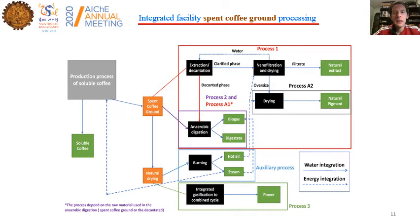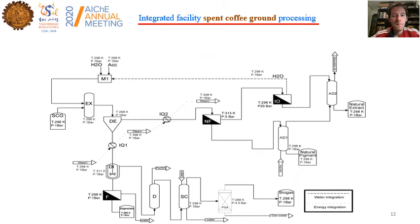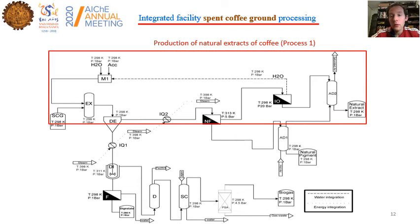The second process deals with the integration of spent coffee grounds within the production of soluble coffee. We consider up to four different processes to obtain natural extract, natural pigment, power, and the utilities needed for our process. Together with energy integration, as in the previous case, we also consider water integration to reduce consumption. The first process, A1, deals with the production of natural extract, produced by first extracting the organic matter.